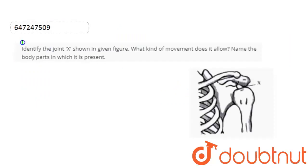Hello students, let's start the question. The question here is: identify the joint X shown in the given figure. What kind of movement does it allow? Name the body parts in which it is present. You can see the diagram here, this is the X.